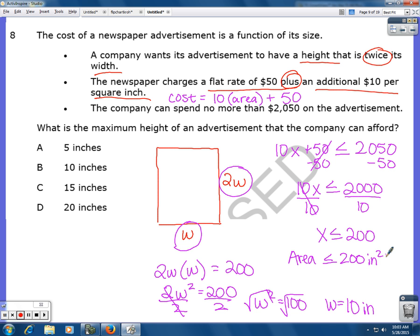So actually the area could be inches squared. So that means that my width could be 10 inches. And my height is 2 times the width. So that's 20 inches. That's the biggest the advertisement could be in order for it to stay under that price.